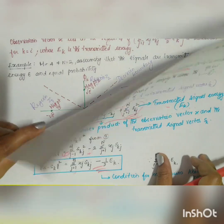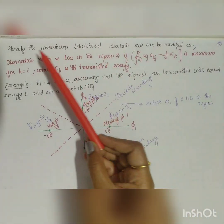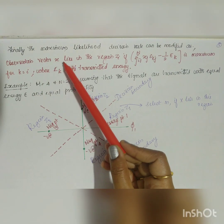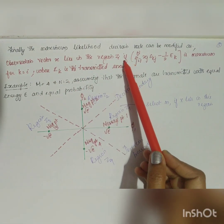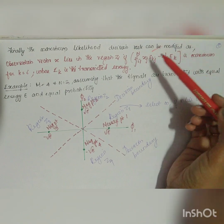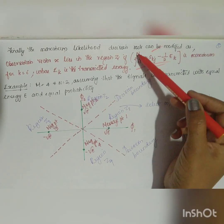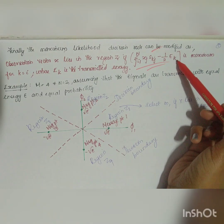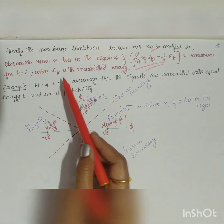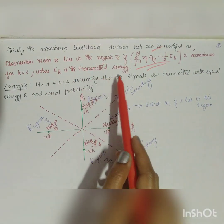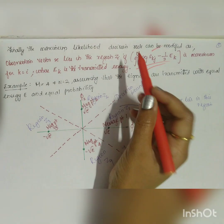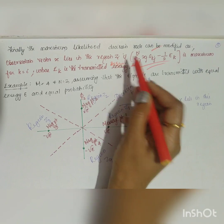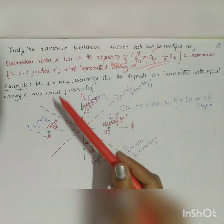Therefore, ‖x − sk‖² = Σ skj² − 2·Σ xj·skj. Rearranging by multiplying by minus, the condition for the maximum likelihood receiver becomes: observation vector x lies in region zi if Σ(j=1 to N) xj·skj − (1/2)·Ek is maximum for k equal to i, where Ek is the transmitted signal energy.